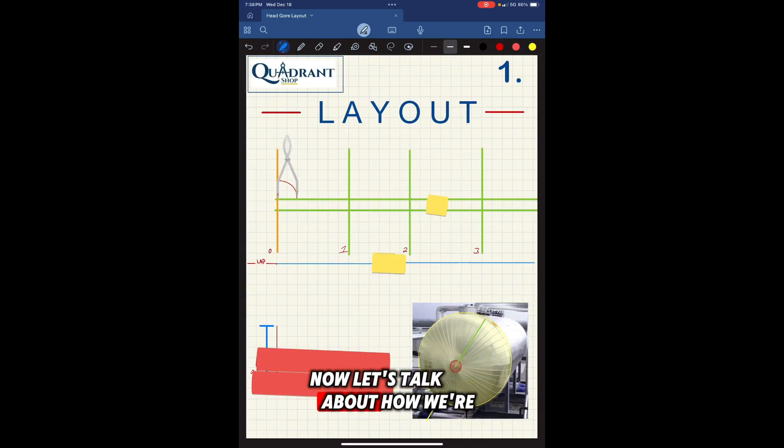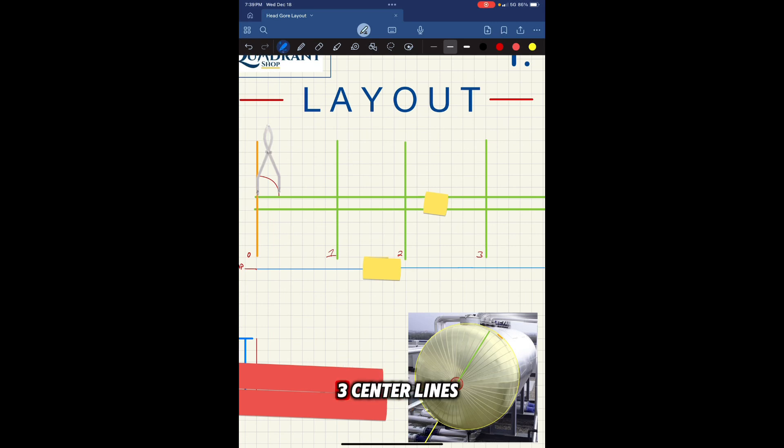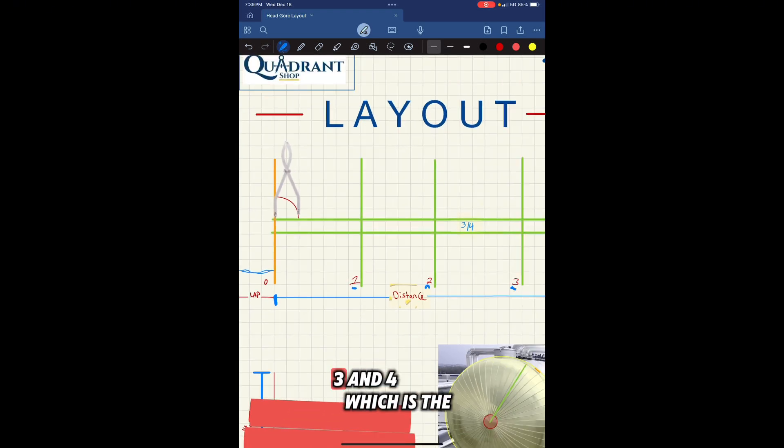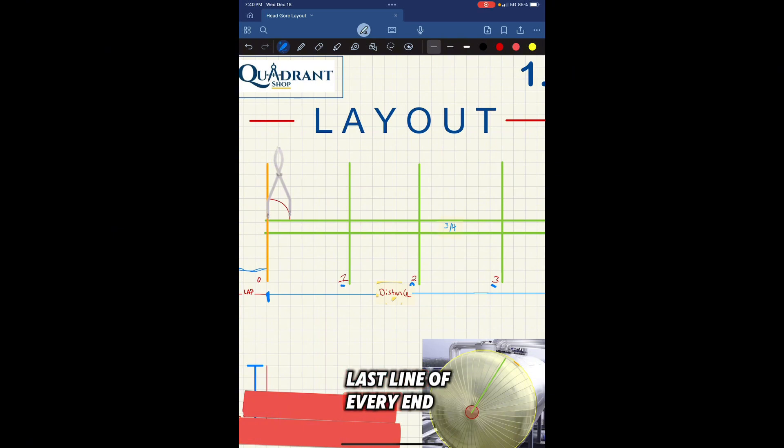Let's talk about how we're going to lay this out. You see the two green center lines - those two lines are going to be three quarter apart from each other. Once you have that, make sure you mark the distance of your head gore, which we say is 45.5. You divide 45.5 into four parts, one, two, three, and four, which is the last line at the very end. Make sure you lift five or three inches, or you see the orange line - that would be the lap of the back of the gore. Some people do three, other people do five.